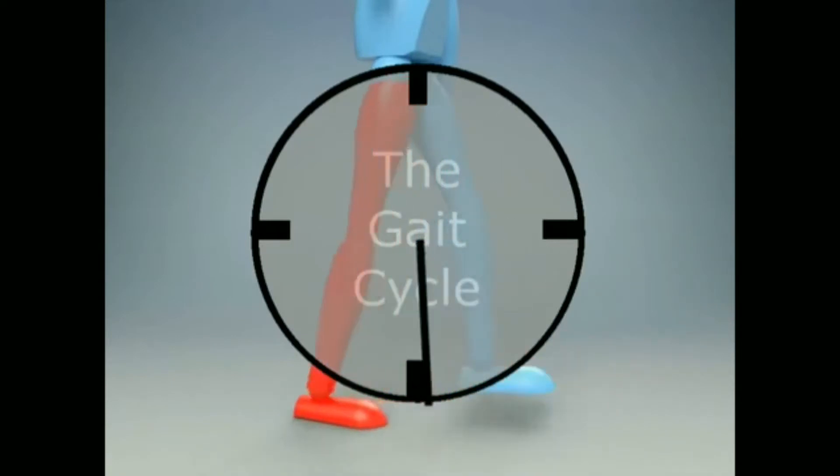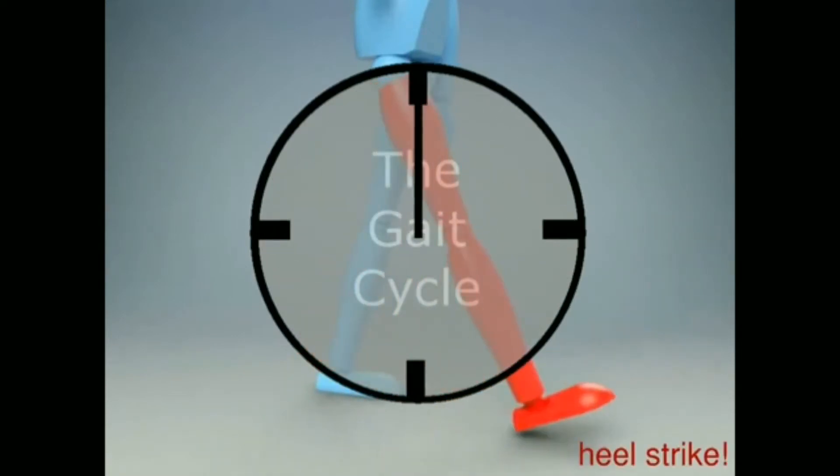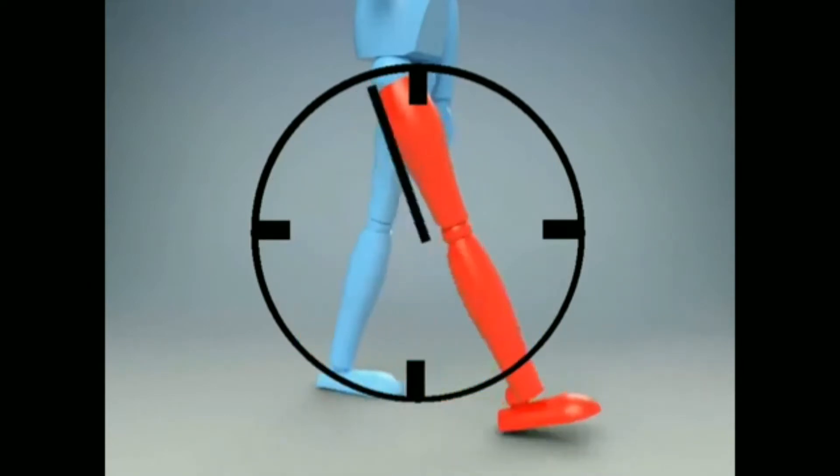The gait cycle is a complete stride with the reference limb, measured from one heel strike when the foot first touches the ground to the next time the foot hits the ground. For a successful gait cycle, the reference limb must do three things, which we call gait tasks.